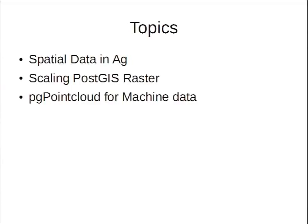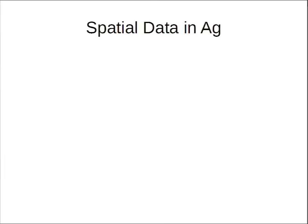In the ag work sphere, the key challenges involve scaling up PostGIS Raster to handle large-scale streaming datasets for the agricultural world, as well as the application of PG Point Cloud for machine data. Basically, in terms of spatial data for the ag sphere, it really boils down to four key components.